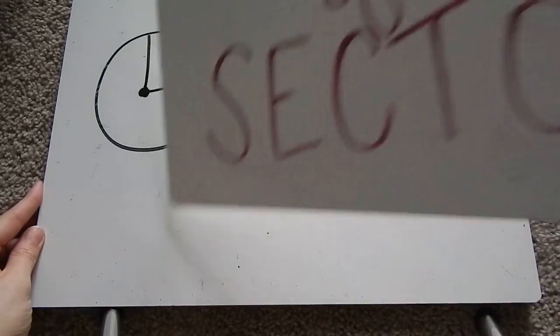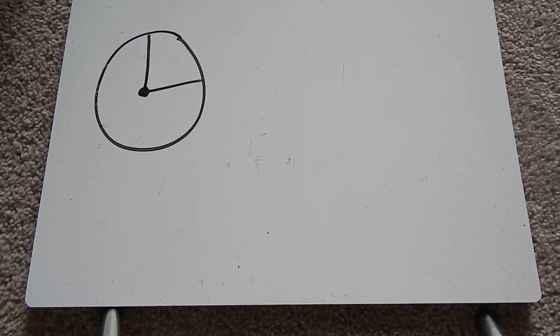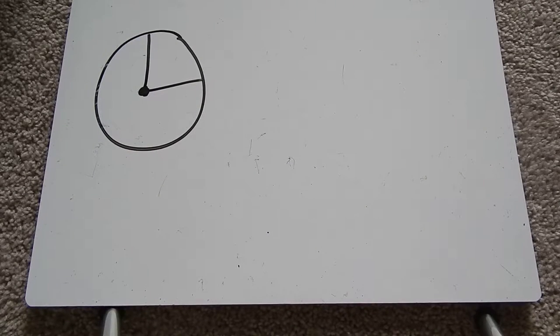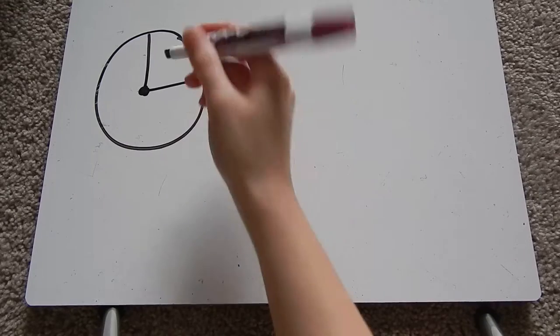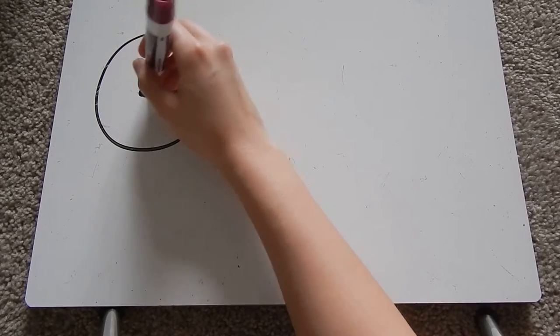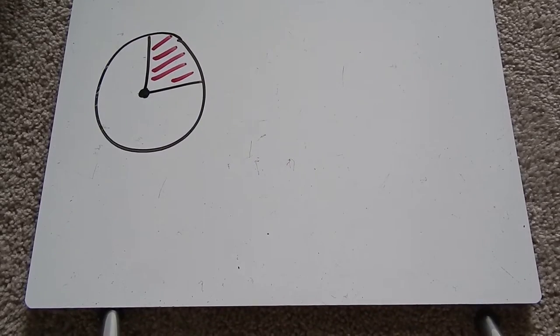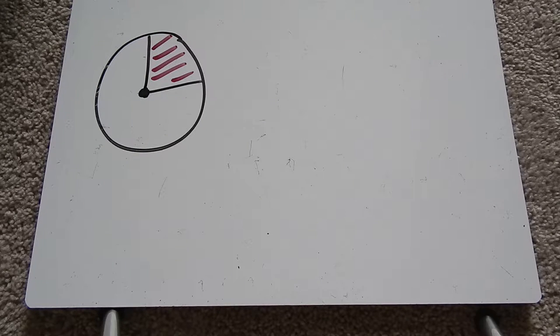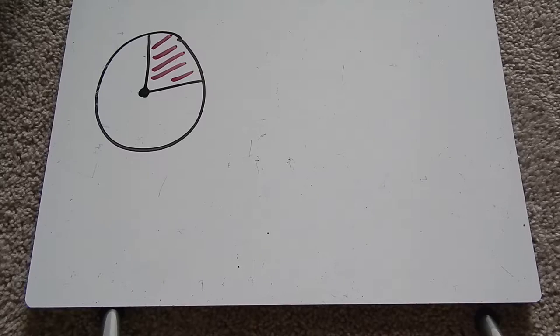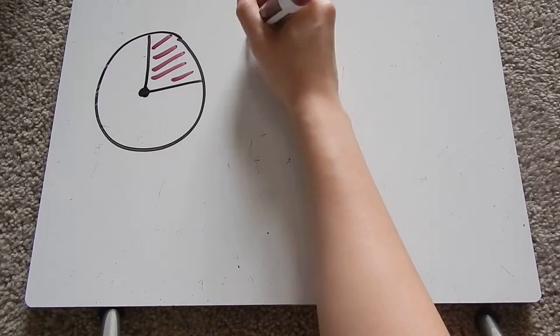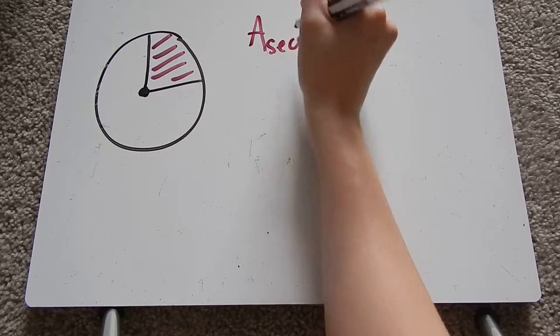So let's talk about the formula to find area of a sector. Here we have a circle. Here is a section of the circle. And so to find the area of this section, we're going to use the formula area of the sector.